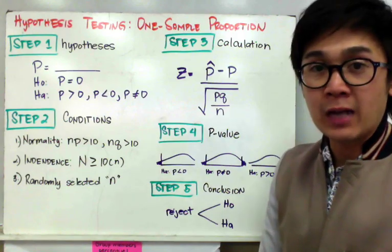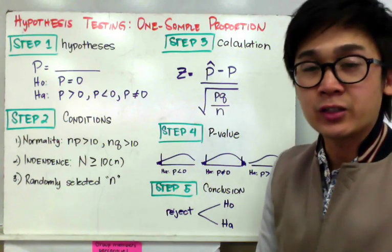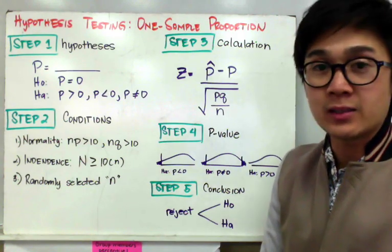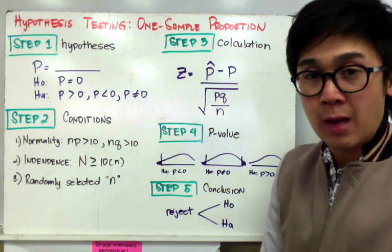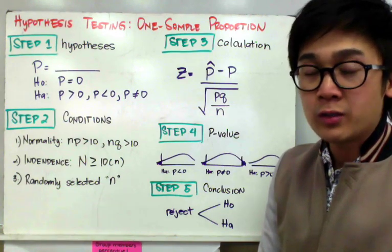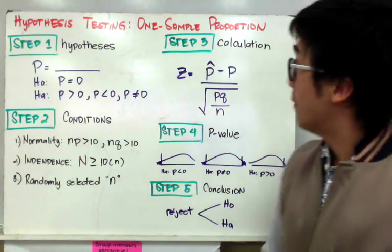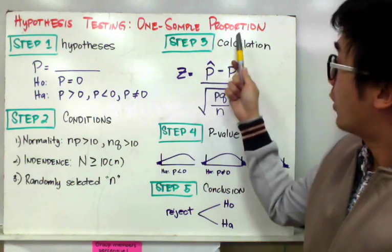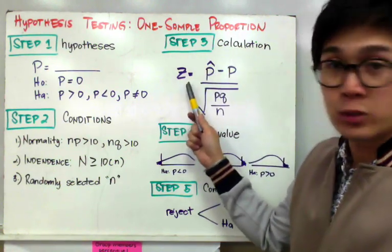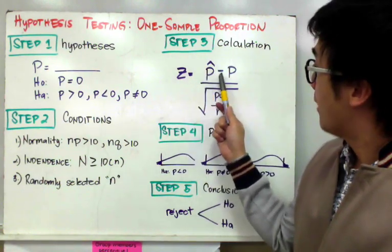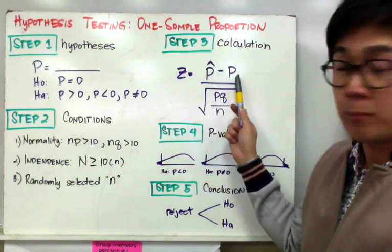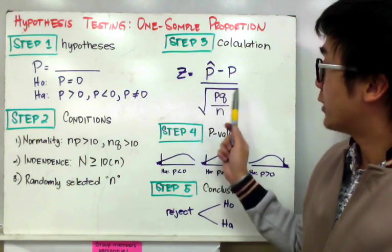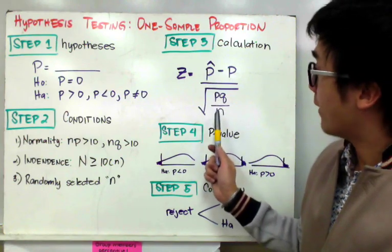For step three, our calculation: in general form, the test statistic is the statistic minus the parameter, all over the standard deviation of the parameter. Since we are working with one sample proportion, our formula is z equal to p-hat minus p, which is the population proportion, all over the square root of pq divided by n.